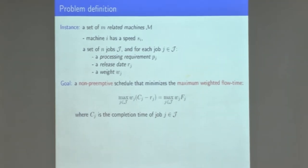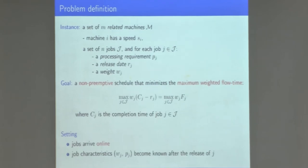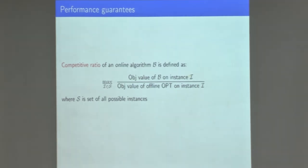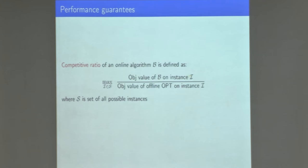The model is that jobs arrive online — you do not know a job's characteristics before it arrives. When it arrives, you learn its processing time and weight; this is the clairvoyant model, as opposed to the non-clairvoyant model where you only discover the processing time after completion. We look at worst case. We measure performance using competitive ratio: the objective value relative to the offline optimal, which knows the entire instance beforehand and decides the schedule, whereas the online algorithm knows nothing about the future.